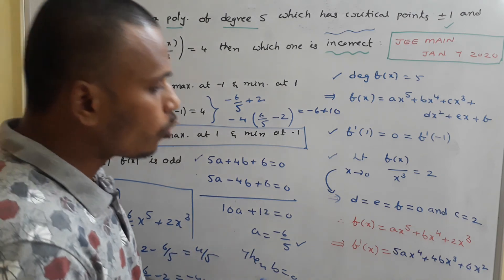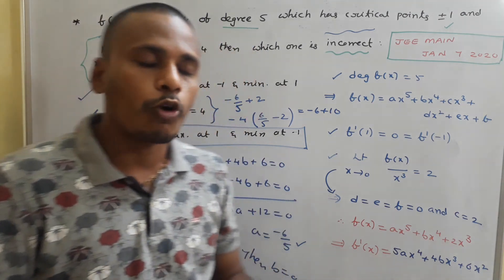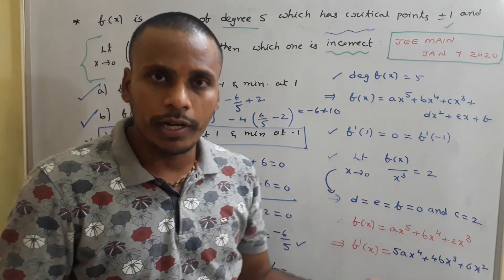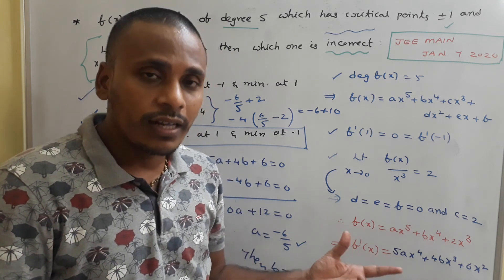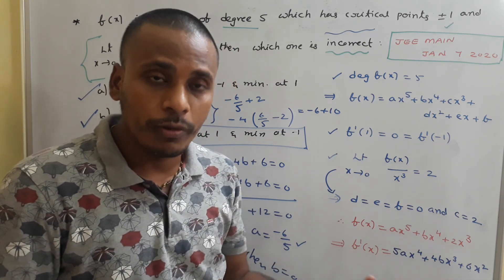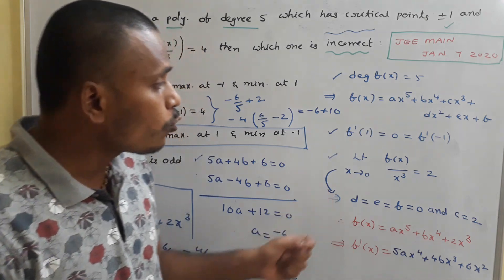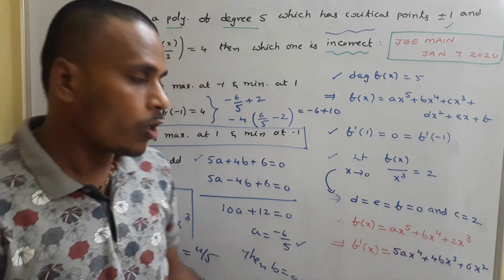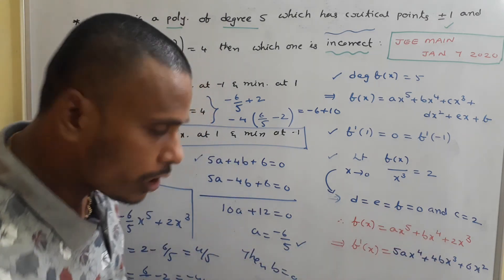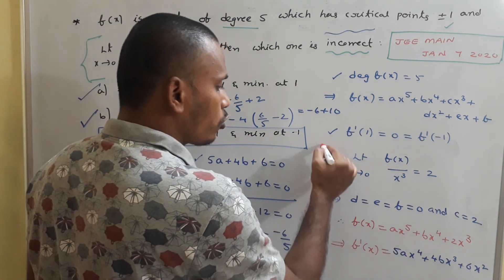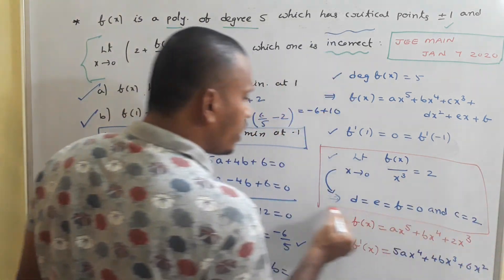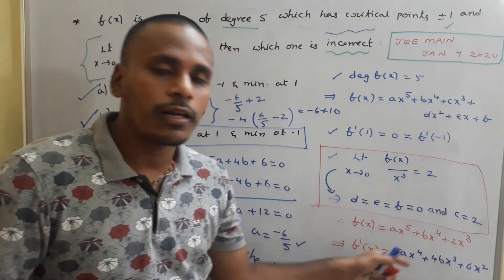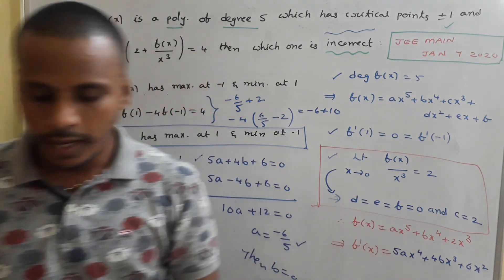Since this is a JEE Main question, we need to solve it within two and a half minutes, ideally in one and a half minutes. This is achievable if you are aware of all the concepts used — particularly the limit technique to identify d, e, f, and c values from the condition limit x→0 of f(x)/x³ = 2. Once those values are found, the rest is straightforward.